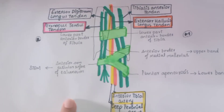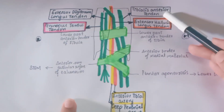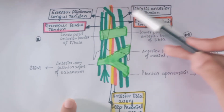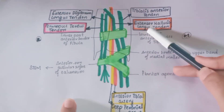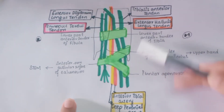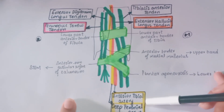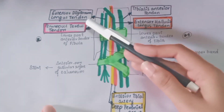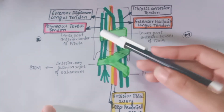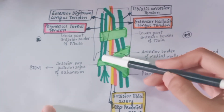A quick review of the contents includes: the tibialis anterior tendon, then the extensor hallucis longus tendon, then the anterior tibial artery and the deep peroneal nerve, then the extensor digitorum longus tendon, and lastly the peroneus tertius tendon.